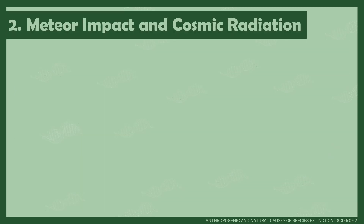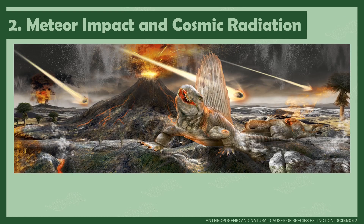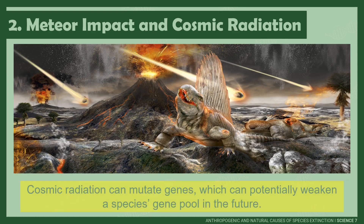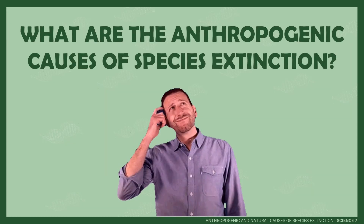Meteorite impact is the major cause of mass extinction 65 million years ago. On the other hand, cosmic radiation can mutate genes which can potentially weaken a species' gene pool in the future. The lack of biodiversity within a species would lead to extinction when they are exposed to some types of stress. Those are the two major natural causes of species extinction.